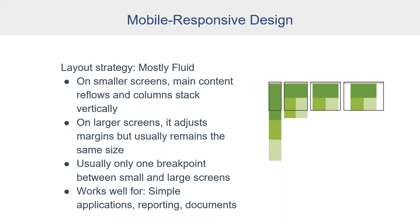The first strategy is called Mostly Fluid. This pattern mostly consists of a fluid grid that reflows the main content and vertically stacks columns on smaller screens. On medium or large screens, it usually remains the same size and adjusts the margins to fit the width. The main advantage is that it usually requires only one breakpoint between small and large screens. A breakpoint is the point where there will be a big change in the application's layout so that it's using the space most effectively. Mostly Fluid works well for simple applications, reporting, and documents.